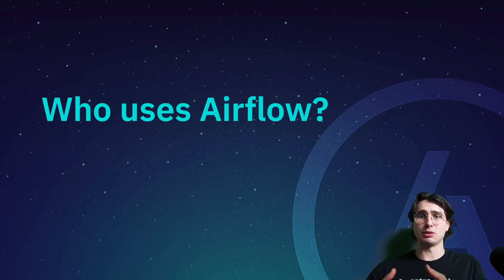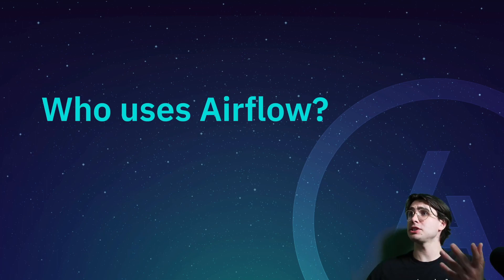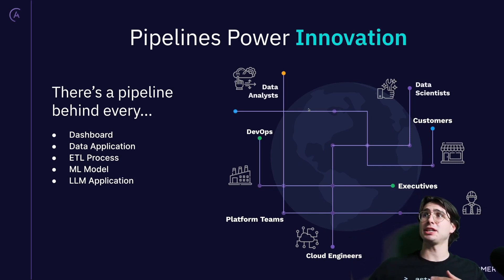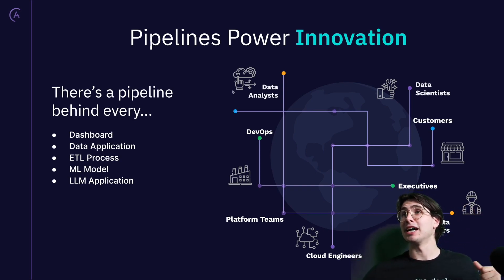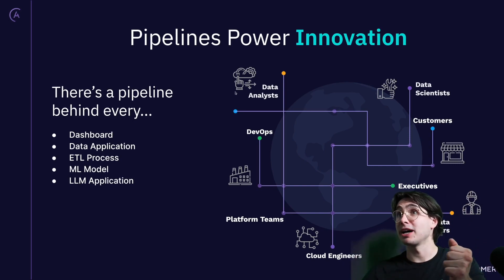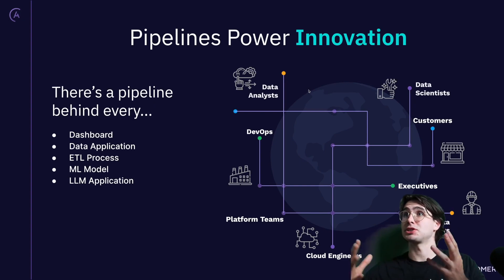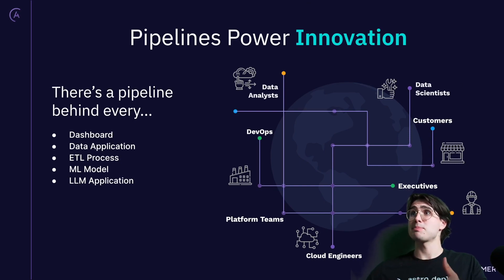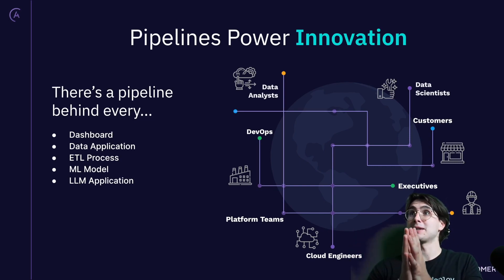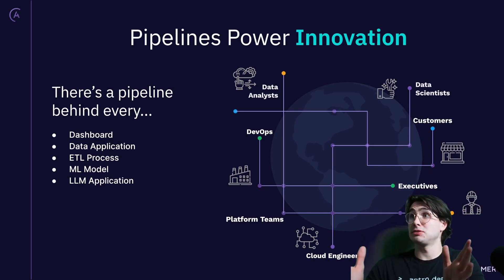Now that we've talked a little bit about what Airflow is and some of the things it can do — who uses Airflow? Why is it used so much across the modern data ecosystem? It's because pipelines power innovation in almost every aspect. There's a pipeline behind almost every piece of the modern business. If you have an analytics dashboard, there's a DAG and a pipeline probably powering that. Data applications serving data to customers or even internally need pipelines. ETL processes, ML models, even training your own large language models all require a pipeline to manage those processes. That's why Airflow is so extensible — it can be fit to do any of these things, and there are millions more use cases out there that Airflow can also be used for.